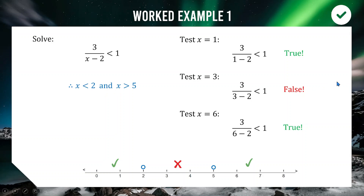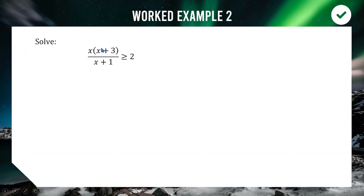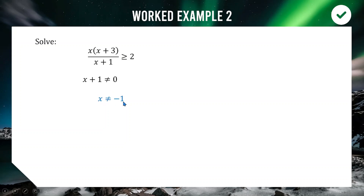Example two: x(x + 3)/(x + 1) ≥ 2. Starting the same way — we cannot divide by zero, so x + 1 ≠ 0, meaning x = −1 is our first critical value. To find the others, we set the inequality to an equation and solve.